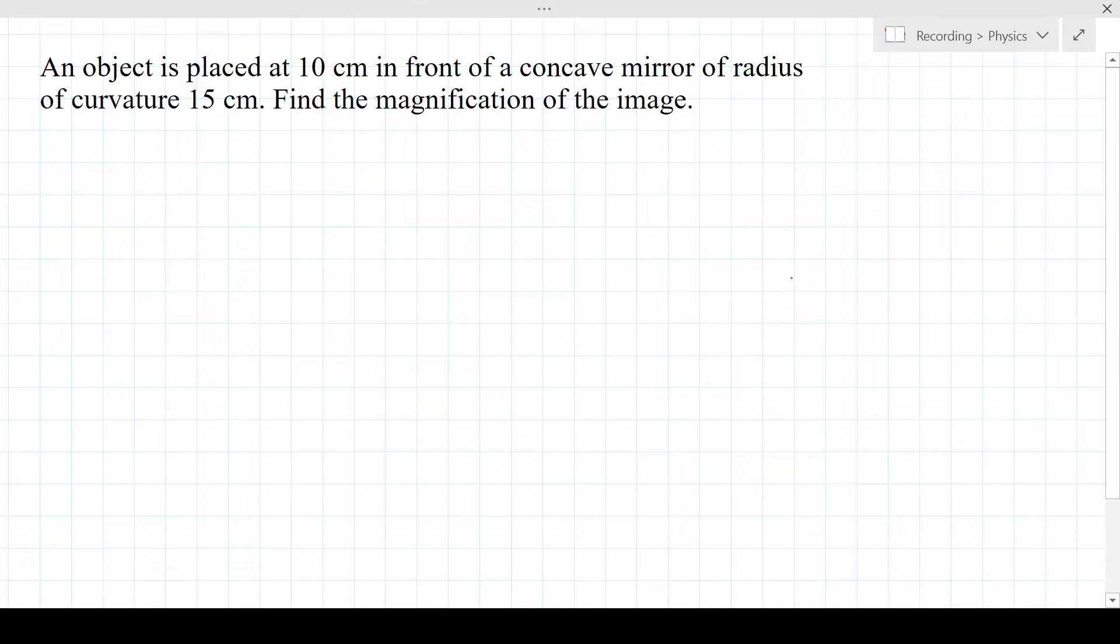Hello everyone, now we are going to solve a question from physics, the chapter light. The question is: an object is placed at 10 cm in front of a concave mirror of radius of curvature 15 cm. Find the magnification of the image.